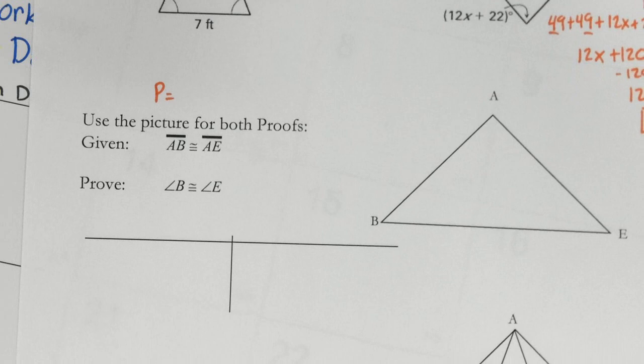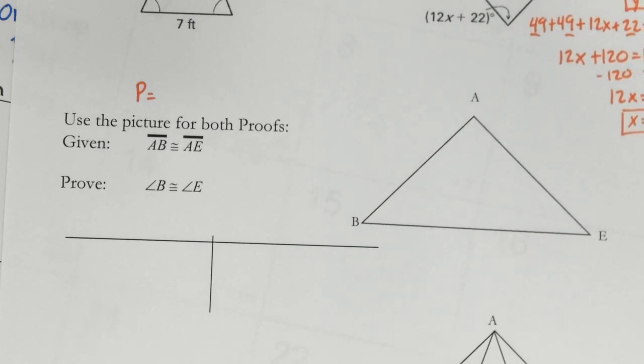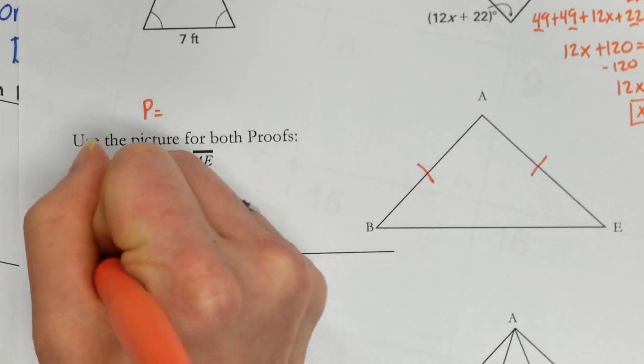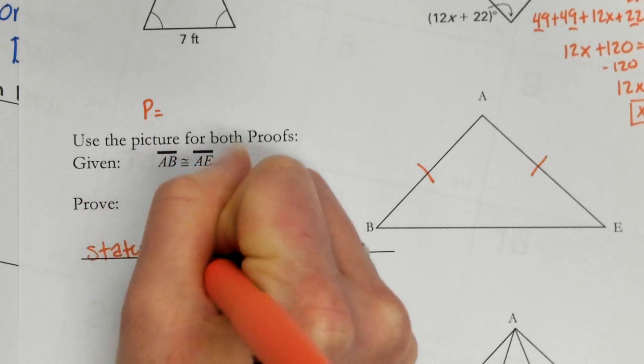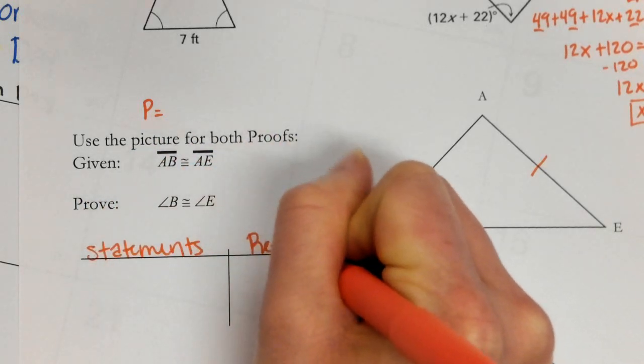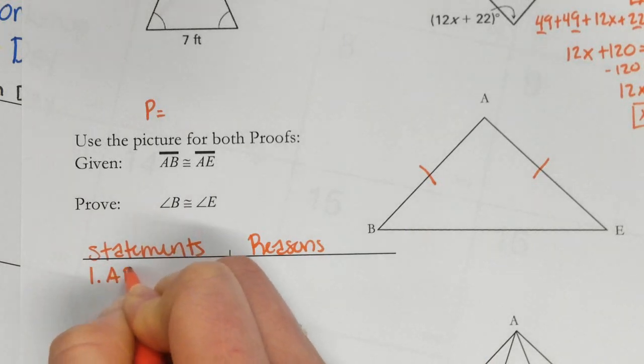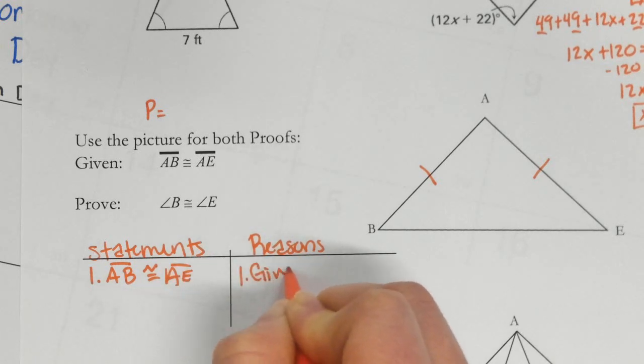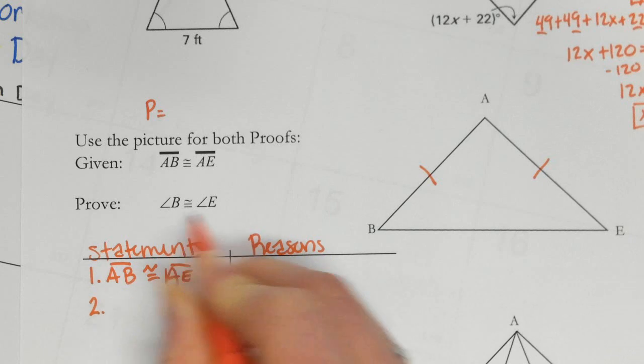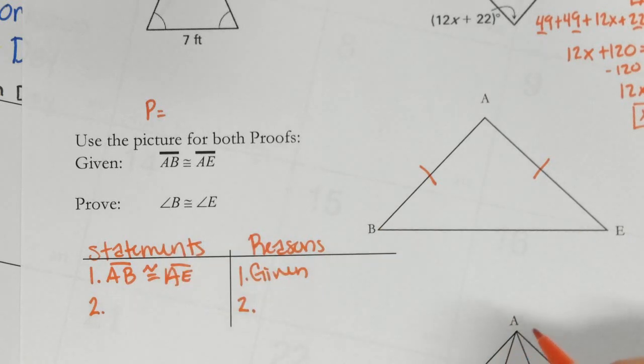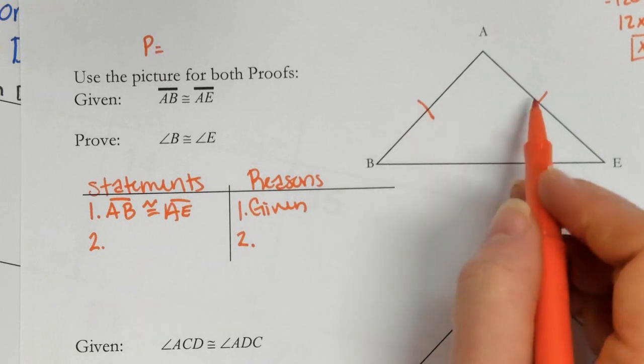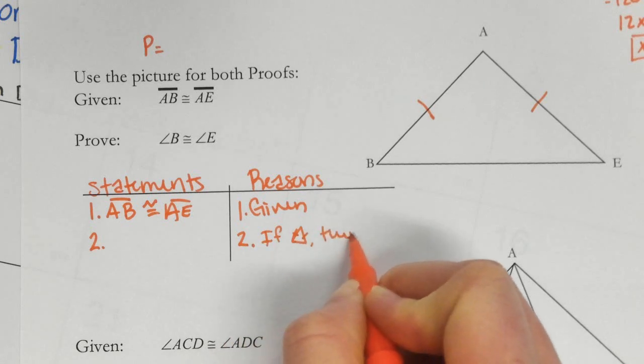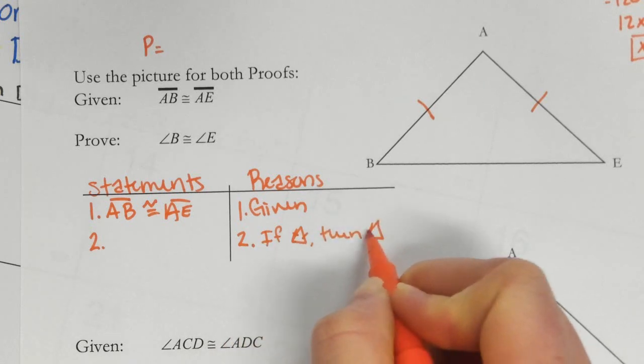Use the picture for both proofs. There's only one proof, so just kidding. So I am given that AB and AE. So this is a good reminder of how to write a proof. So I'm going to start with my given always. Now what I want to get to is I want B and E to be congruent. Well, I have two sides are congruent.